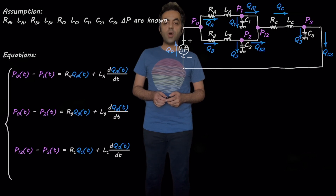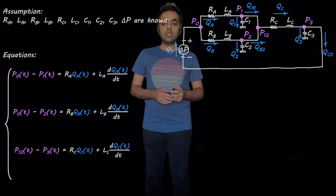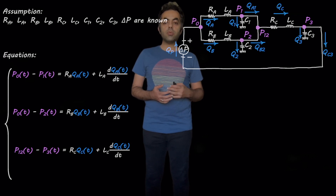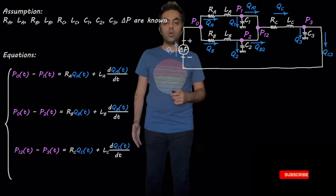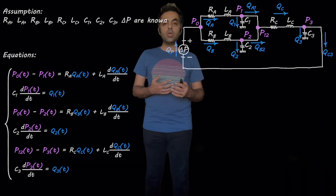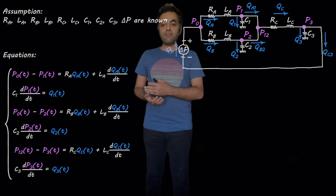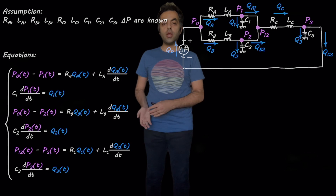For example, between point 0 and 1, we can write P0 minus P1 equals RA times QA, which is the pressure drop due to resistance, plus LA times dQA over dT, which is the pressure drop due to inductance. And similarly we can derive the equations for the other two pressure drops. Also we can write the equations for the flow through the capacitors. For example, for the first capacitor, we can say C1 times dP1 over dT equals Q1. And similarly we can derive the other two equations.